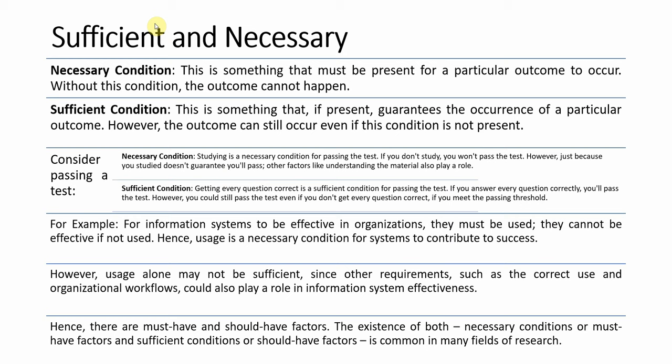We have come across two terms: sufficient and necessary. A Necessary Condition is something that must be present for a particular outcome to occur. If you want to achieve an outcome, there are certain factors that must be present. Otherwise, you cannot achieve that particular outcome. Those conditions are called Necessary Conditions.